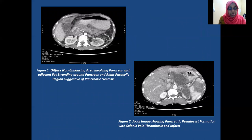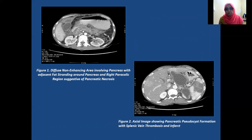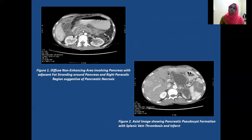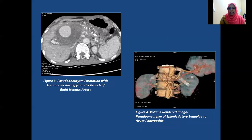In Figure 1, we can appreciate a diffuse non-enhancing area involving the pancreas, as well as peripancreatic fat stranding and fat stranding in the right paracolic gutter, suggesting pancreatic necrosis. In Figure 2, there is a well-defined fluid collection with thin margins in the lesser sac region in a patient with pancreatitis — this represents pseudocyst formation in the lesser sac. We can also appreciate a hypodense wedge-shaped area in the spleen, suggestive of splenic infarct due to splenic vein thrombosis.